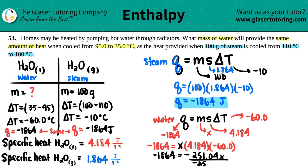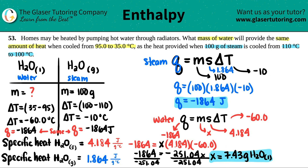The specific heat is the specific heat for water, 4.184, and the delta T for water was negative 60.0. So negative 1,864 equals X times 4.184 times negative 60. Multiply those two numbers together: 4.184 times negative 60 gives negative 251.04 times X. Then divide: negative 1,864 divided by negative 251.04. X equals 7.43 grams of water.